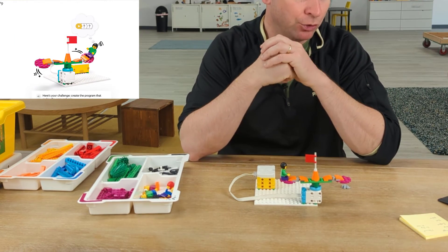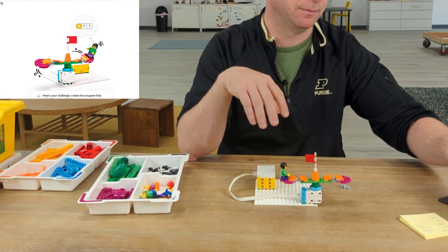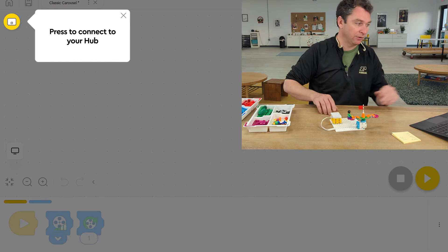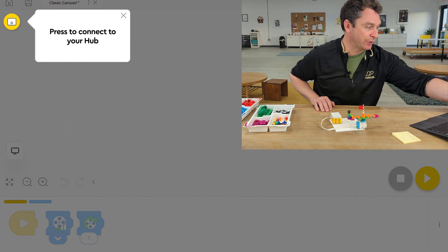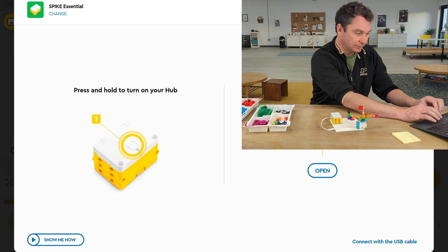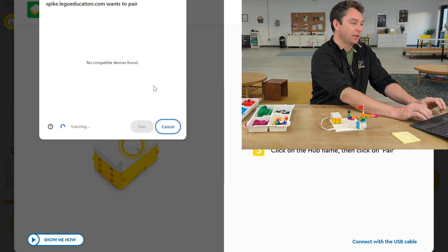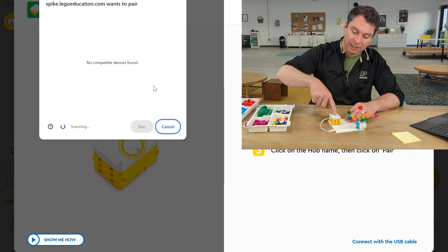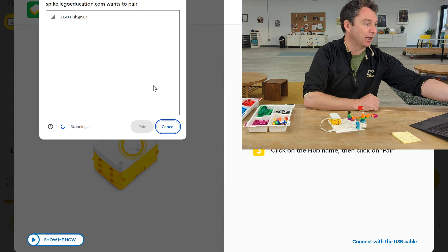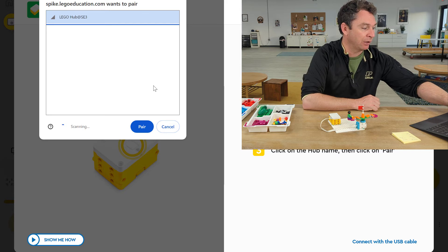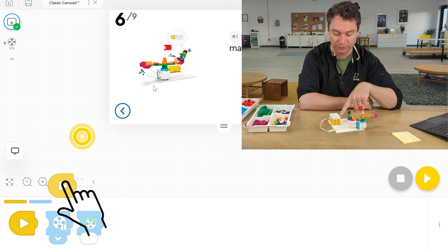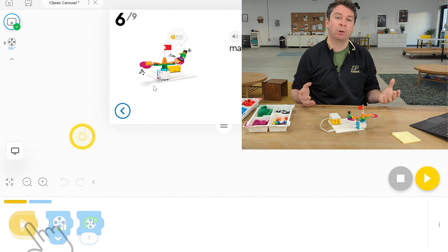Now we're ready for our challenge. Here is your challenge: Create the program that's going to make the carousel spin. We need to connect our hub. We'll press the little yellow circle in the top left corner of our screen. We're going to click Open. I always press the button on top of my hub just one time. It starts to flash. Then my hub pops up on this pair screen. I click the blue pair button. I know it's connected when this light turns blue. So now we're ready to code.